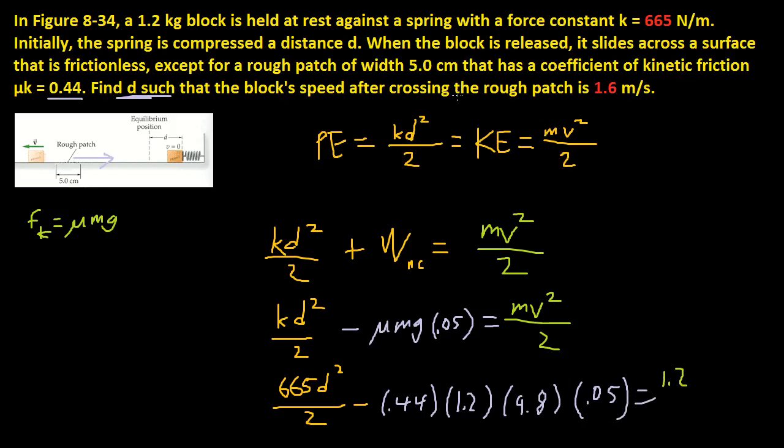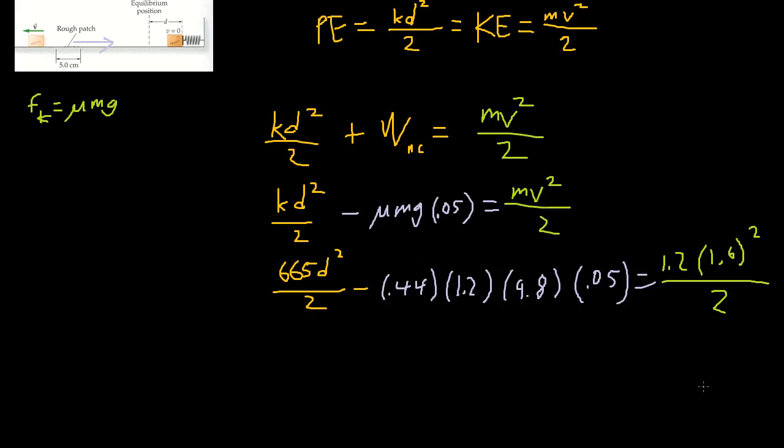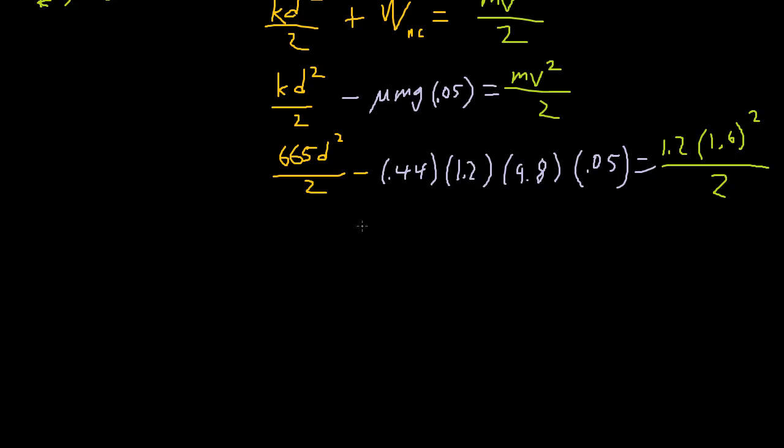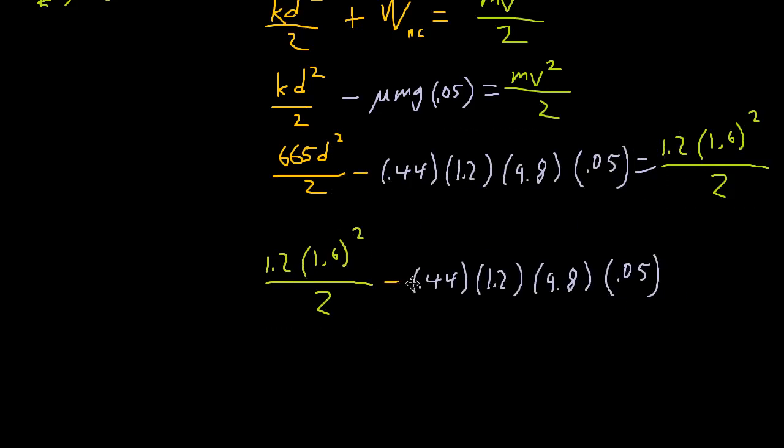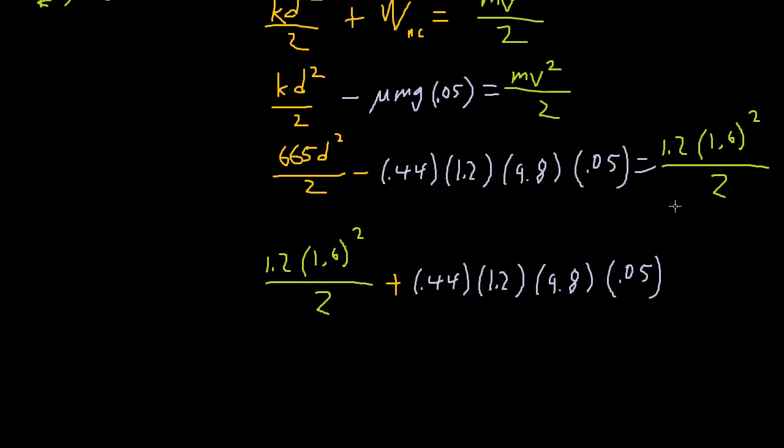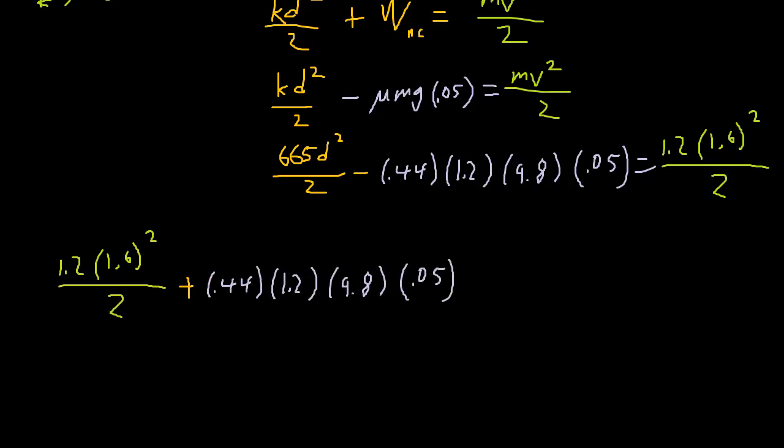is equal to the mass, 1.2, times velocity squared, so that would be 1.6 squared, all over 2. Now we just solve for this thing. So if we add the work of non-conservative force on each side, which is this purple expression, we would get this plus this. So that should be a plus.